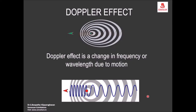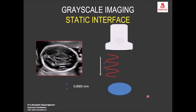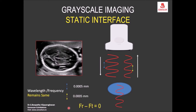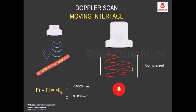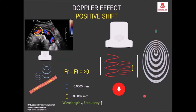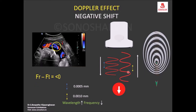In grayscale imaging, the interface is static — for example, in BPD measurement, all the interfaces remain the same. When the interface is moving, it does not remain the same. The difference in frequency is called the Doppler effect, and the difference itself is called the Doppler shift. When the RBCs or the interface move towards the source, the wave gets compressed.